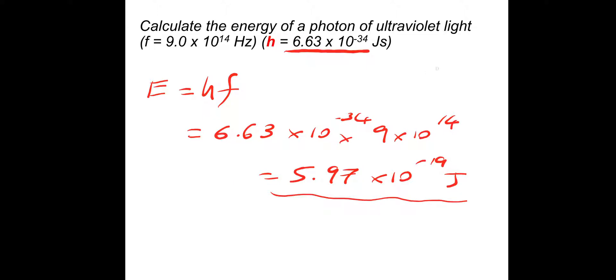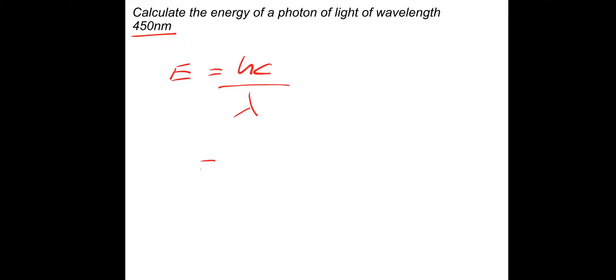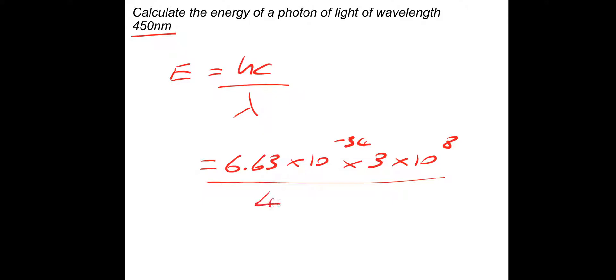Straightforward. Let's do another recap question. On this one we're going to calculate the energy of a photon of light of wavelength 450 nanometers. Pause and have a go, then I'll take you through it. We've got the wavelength. Energy is equal to hc over the wavelength. So Planck's constant is 6.63 times 10 to the minus 34, multiplied by the speed of light 3 times 10 to the 8, divided by the wavelength 450 nanometers, so times 10 to the minus 9 meters. That gives an energy of 4.42 times 10 to the minus 19 joules.